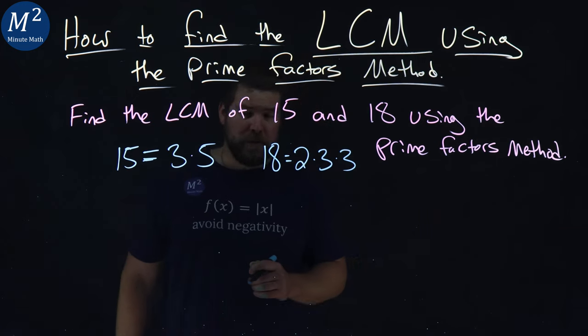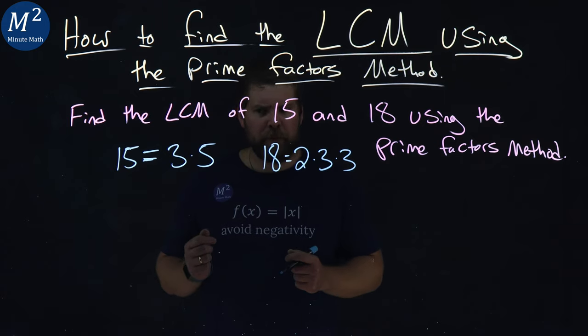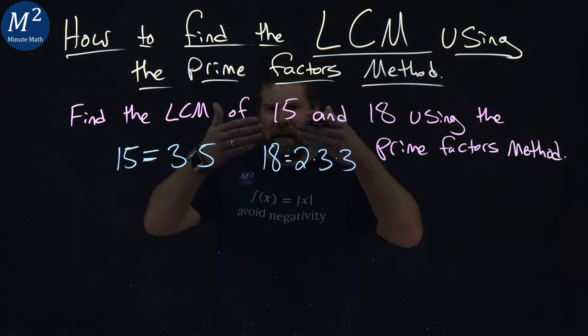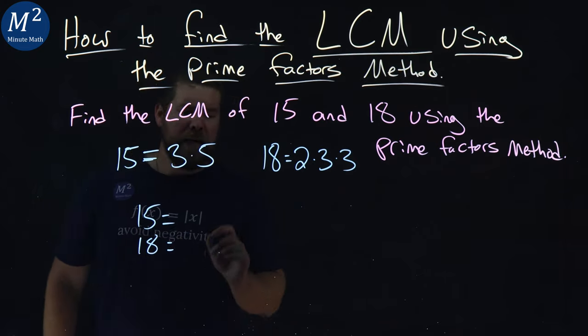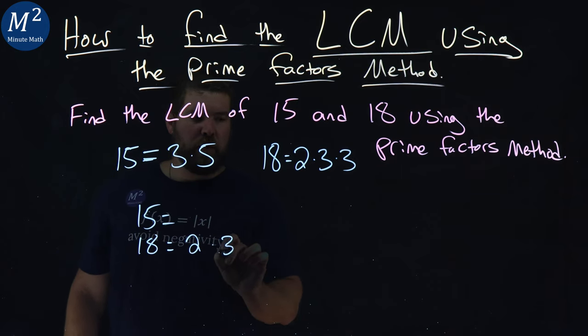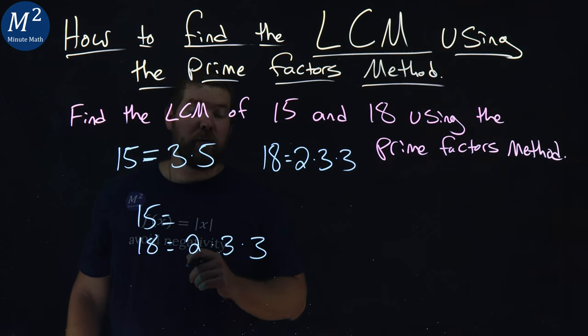We've got our prime factors here. Now what do we do with them? Well, we're going to make them kind of like in some columns. We'll write 15 first, and 18 underneath it. Well, 18 is 2 times 3 times 3.